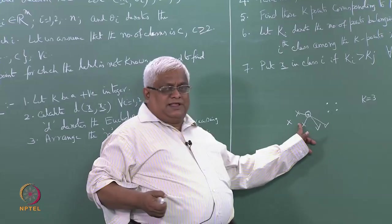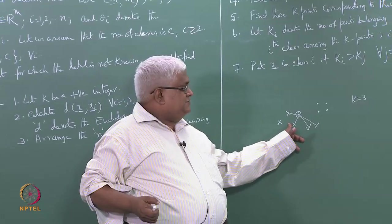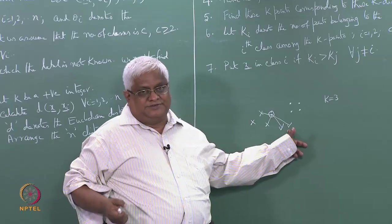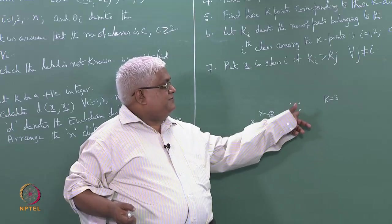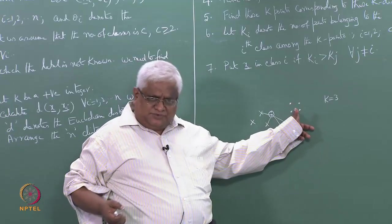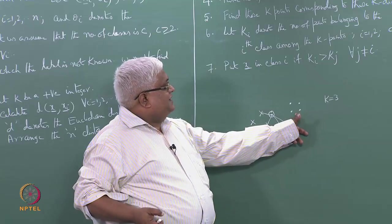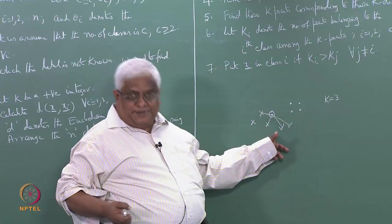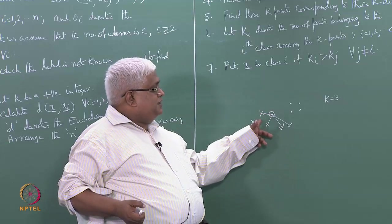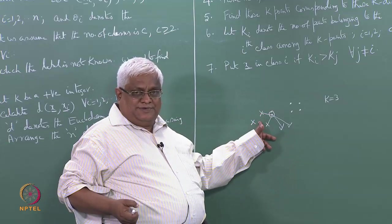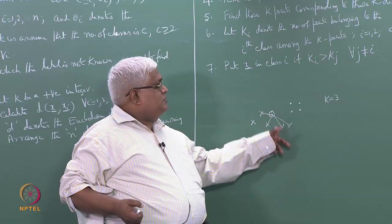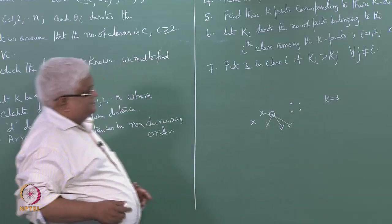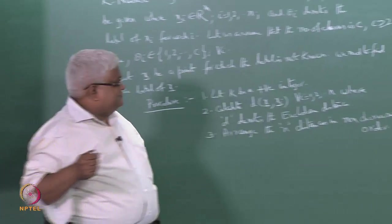For example, if k equals 4 and the fourth nearest neighbor is chosen, class 1 and class 2 might each have two representatives, and class 3 has none. Then to which class should we put this point — class 1 or class 2? That is another doubt.